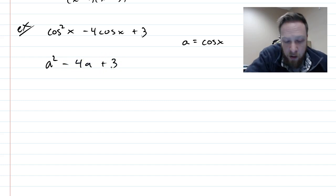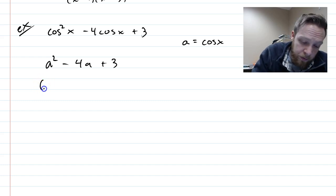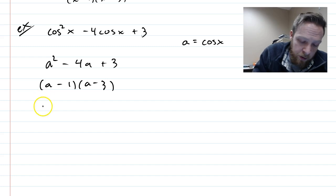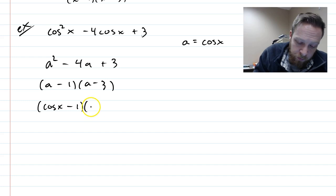And then we would factor like we normally do. Now we know that negative 3 and negative 1 will work here. So that's my factorization. And then I plug back cosine x. We substitute in for a.